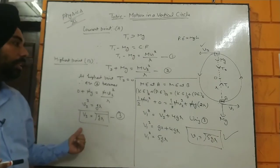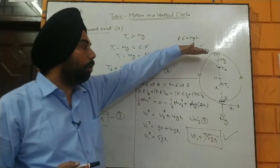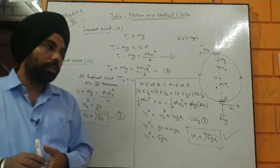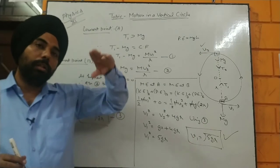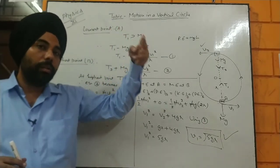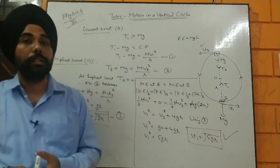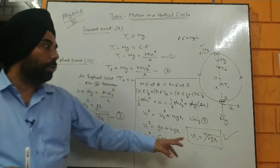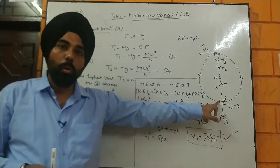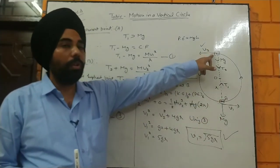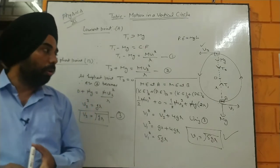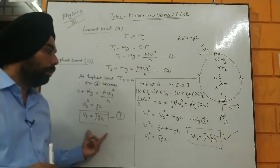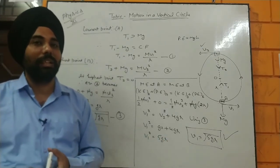So to summarize: the velocity at the lowest point is square root of 5gr and at the highest point is square root of gr. Motorcyclists use this principle to circulate in a vertical circle in a circus — they have the highest velocity at the lower end and the minimum velocity at the top end of the vertical circle. I hope you have understood this topic and can now solve many numericals on vertical circle motion.